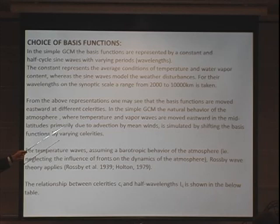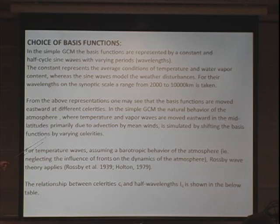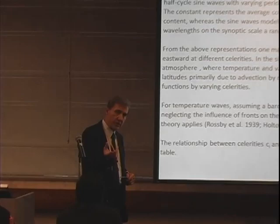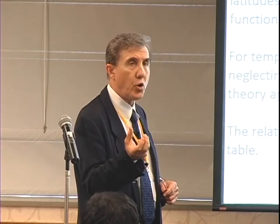These wavelengths have a range from 2,000 to 10,000 kilometers. We are dealing with a synoptic-scale model — a very large-scale model — looking at continental droughts. The temperature and vapor waves are moved eastward in the mid-latitudes, primarily due to advection by winds with varying celerities. Droughts are usually initiated by blocking events such as omega blocks or split jet streams.